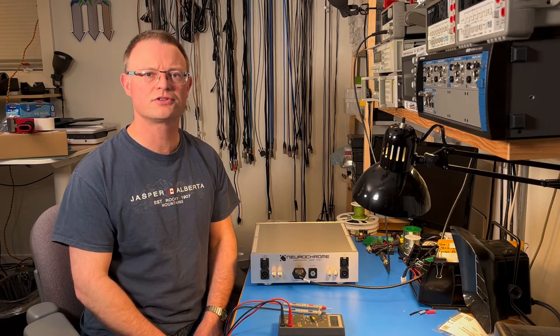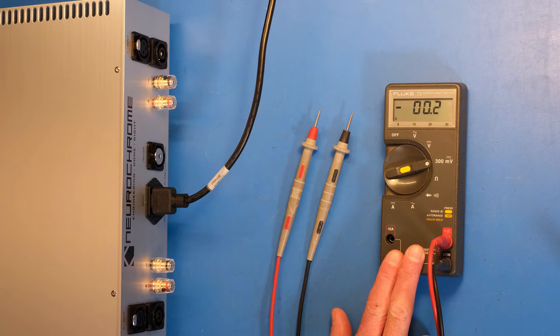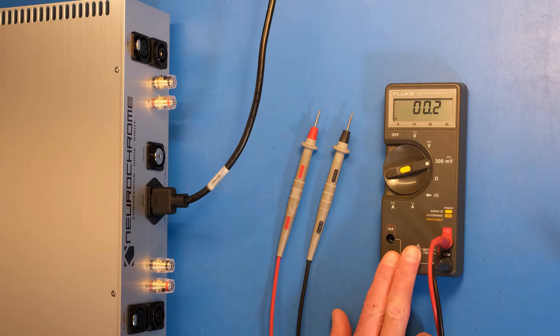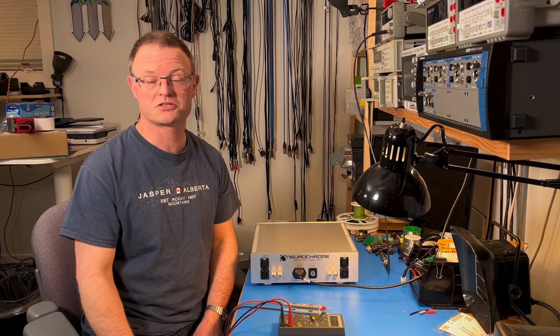Let me introduce you to the test equipment and to the amplifier under test. This right here is a Fluke 73. It is a handheld digital multimeter. It's roughly 30 years old and it just keeps on ticking.